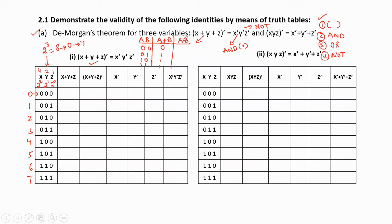Based on this logic, we write the second column x + y + z: when all input variables are 0 the output is 0; if any one input is 1 the output is 1, giving 1 for all remaining combinations. Next, for the third column (x + y + z)̄, we complement the second column — 0 becomes 1 and 1s become 0s — giving: 1, 0, 0, 0, 0, 0, 0, 0.